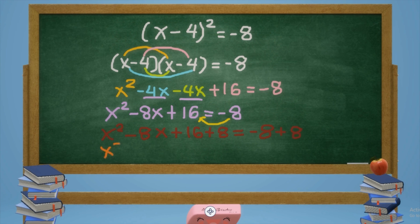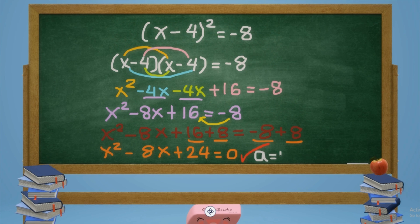Adding 8 to both sides: x squared minus 8x plus 16 plus 8 equals negative 8 plus 8. So 16 plus 8 is 24 and negative 8 plus 8 equals 0. This gives x squared minus 8x plus 24 equals 0, which is now written in standard form, where a is equal to 1, b is equal to negative 8, and c is equal to 24.